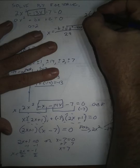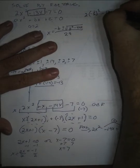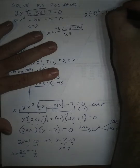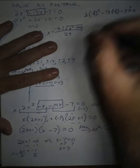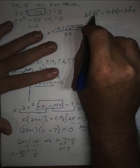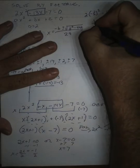2 times negative 1 half squared minus 13 times negative 1 half minus 7, is that zero? Well, negative 1 half squared is positive 1 fourth, 2 fourths is 1 half.